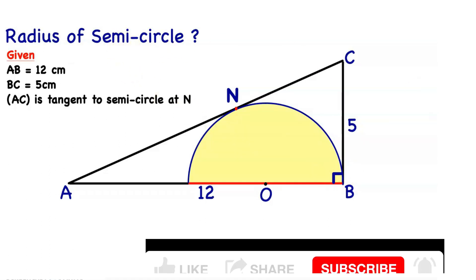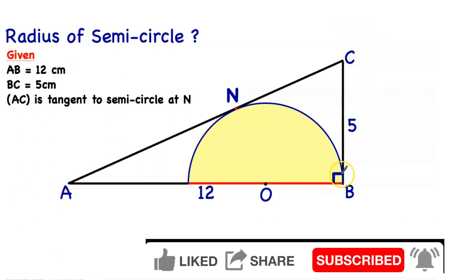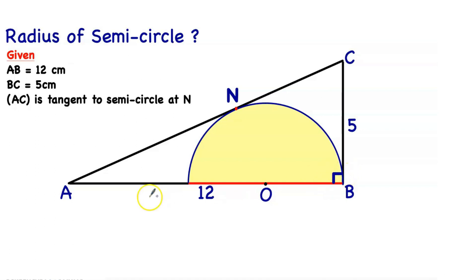Now, always when we have a right angle we should think of the Pythagorean theorem. So AC squared, which is the hypotenuse, is equal to AB squared plus BC squared.